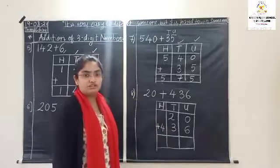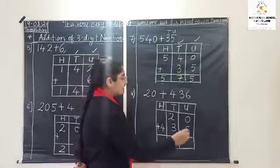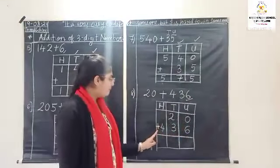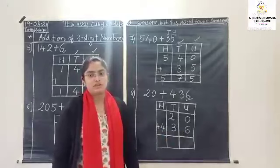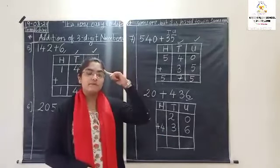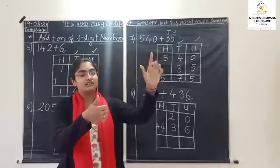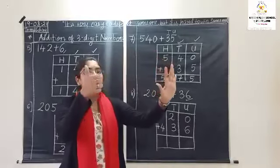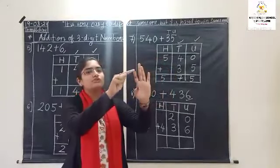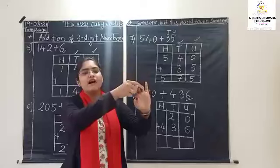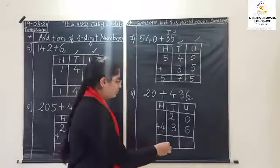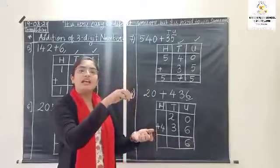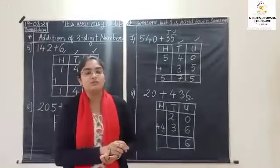Now do the addition. Start with units: zero plus six. Keep zero in mind, remove six fingers. After zero: one, two, three, four, five and six. So if we add zero to any number, the number stays the same — the answer is six.